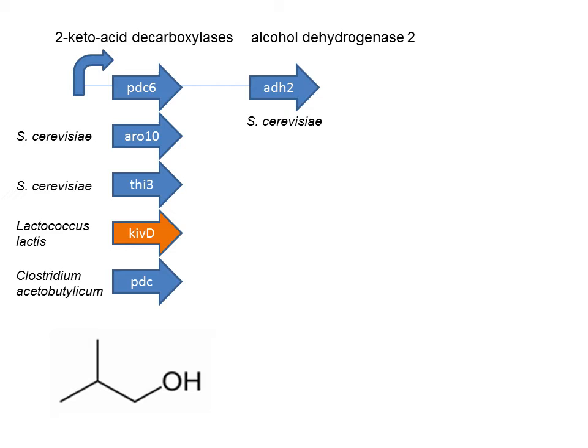To perform these two transformations — first to decarboxylate the acid and then reduce the aldehyde — they needed to identify a 2-ketoacid decarboxylase and a dehydrogenase. The dehydrogenase step is no different than the one encountered in the butyryl-CoA-based pathway, since the aldehyde species is the penultimate step in both pathways. So all they must identify is this decarboxylase. They chose five different ones from different organisms, put them into E. coli along with ADH2, and successfully observed formation of isobutanol. Kivd from Lactococcus works the best.